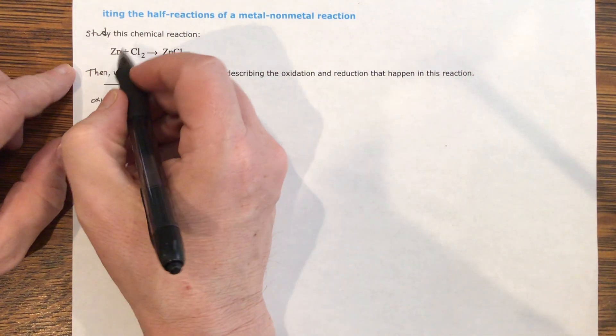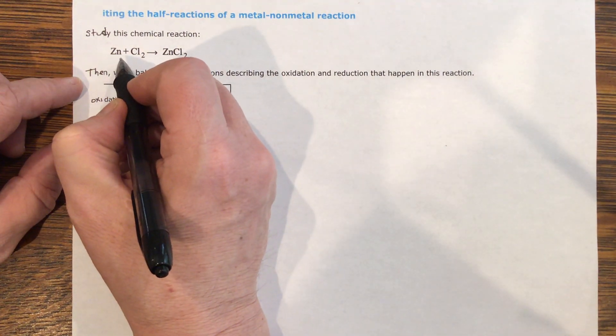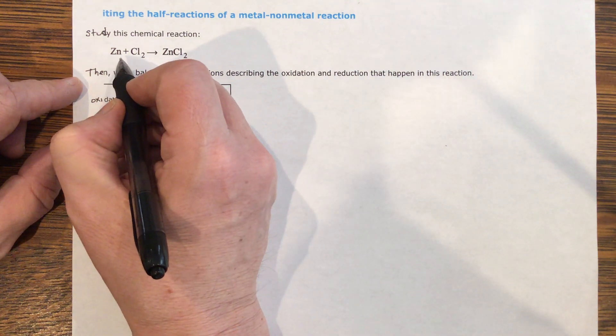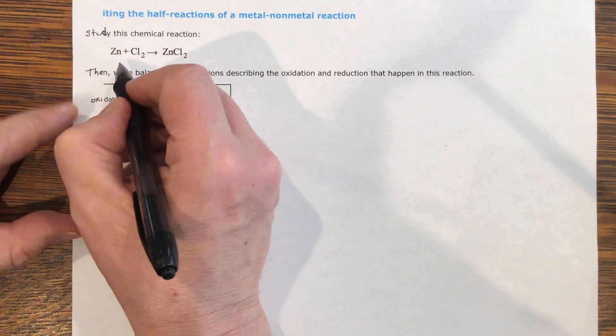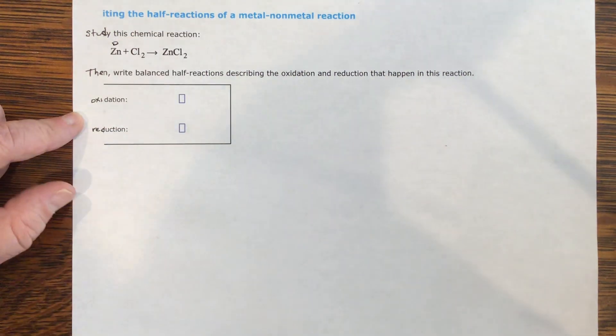So let's look first of all at zinc. Zinc is a metal and zinc is an elemental metal. Anytime you have a form of an element in its free state, the state you would see it in on a periodic table, say solid zinc, it will have an oxidation number of zero.